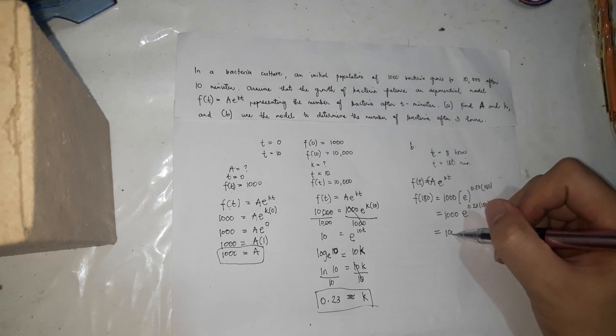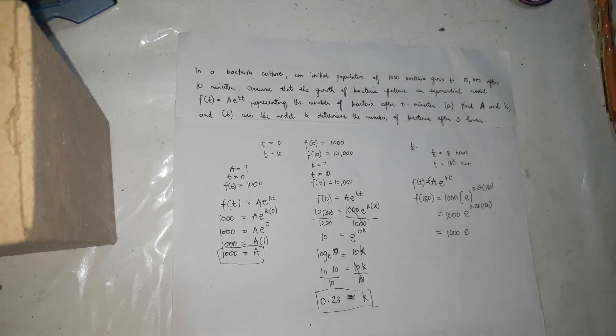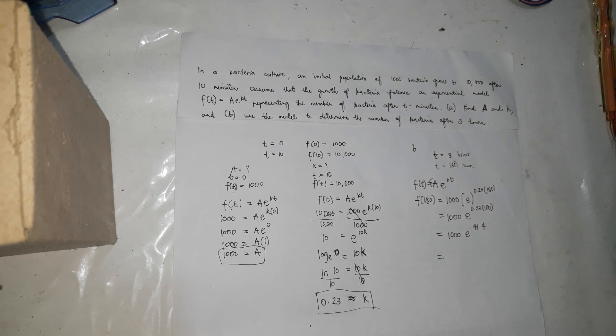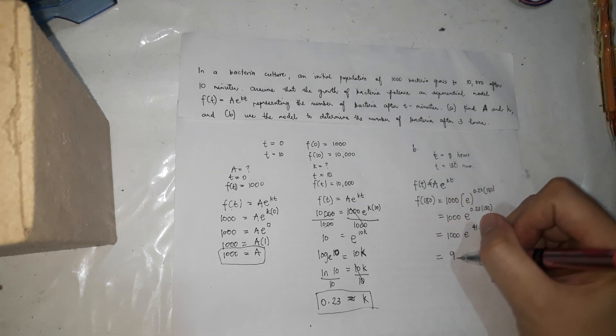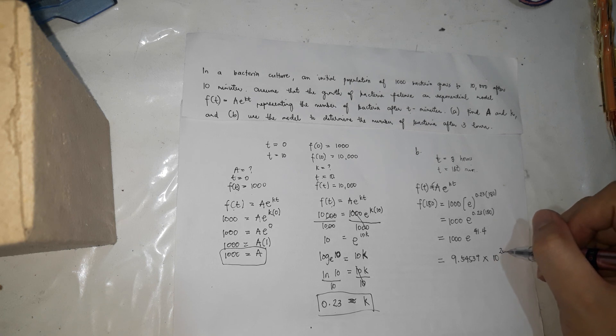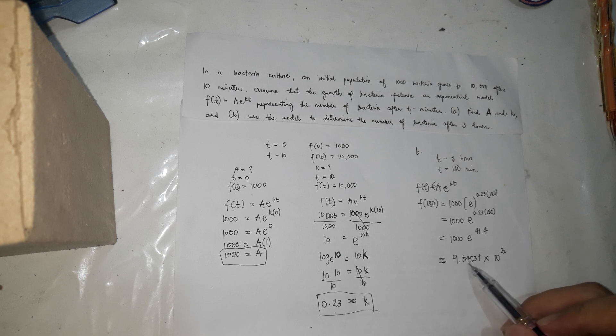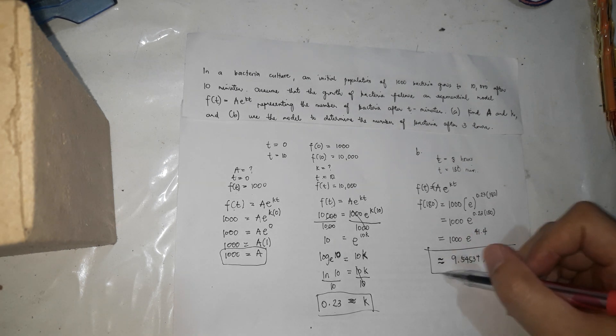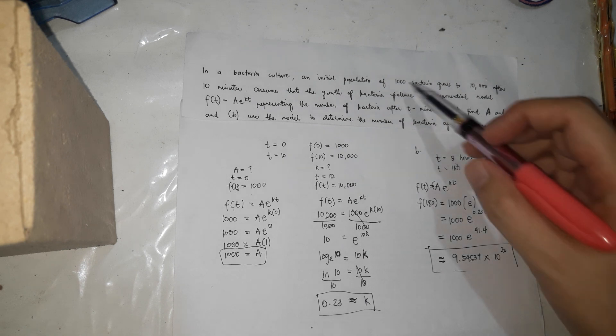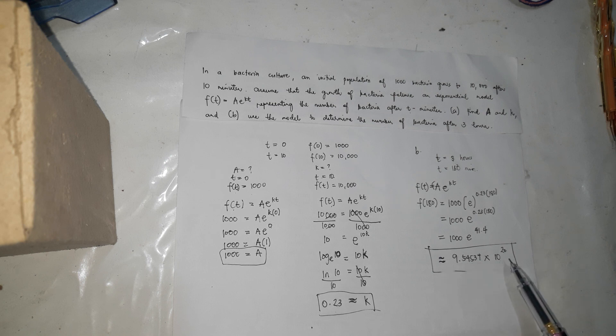This equals 1,000 times e to the power of 0.23 times 180. So the answer here is 1,000 times e to the power of 0.23 times 180, that's 41.4. If you're going to solve this, 1,000 times e to the power of 41.4, the answer is 9.54534 times 10 to the power of 20. So that's the answer. So there's a lot now. So the bacteria after 3 hours, from 1,000, after 3 hours became 9.54 times 10 to the power of 20. So that's how big it is.